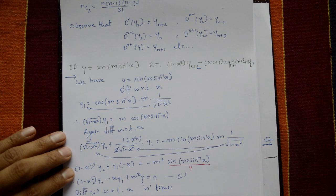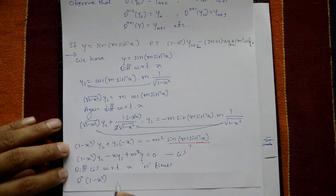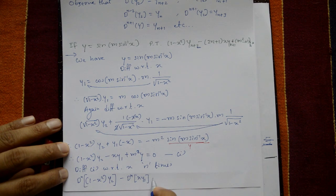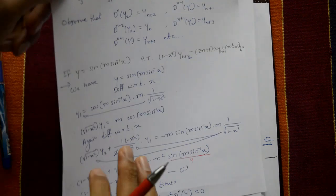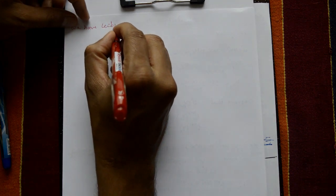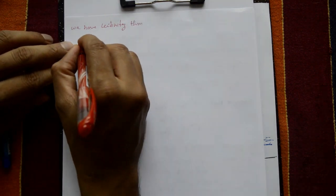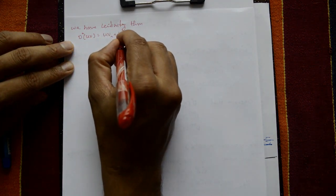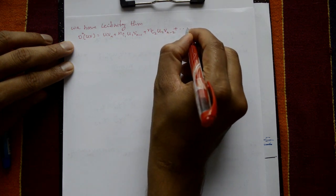Differentiating n times: d raised to n of [(1 - x²)·y2] minus d raised to n of [x·y1] plus m²·d raised to n of y equals 0. Leibniz theorem states d raised to n of (u·v) equals u·vn plus nC1·u1·v(n-1) plus nC2·u2·v(n-2) and so on. We apply this to each term.